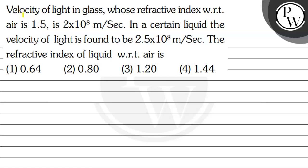Hello, let us read the question. The question says: velocity of light in glass whose refractive index with respect to air is 1.5 is 2 into 10 to the power 8 meters per second. In a certain liquid, the velocity of light is found to be 2.5 into 10 to the power 8 meters per second.